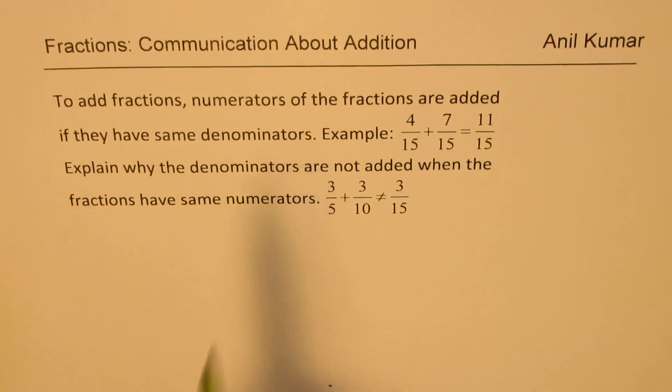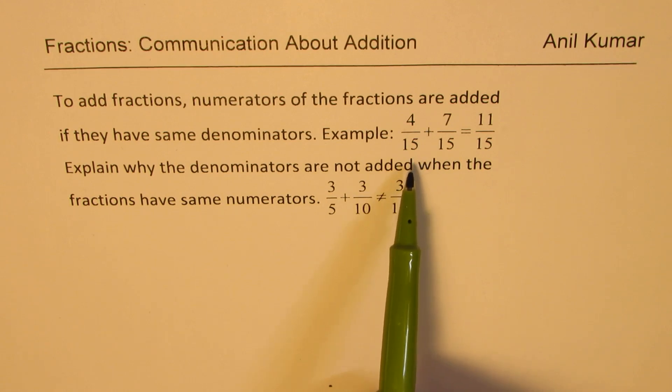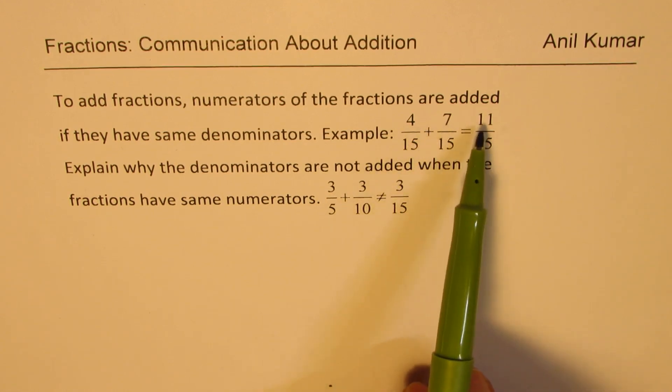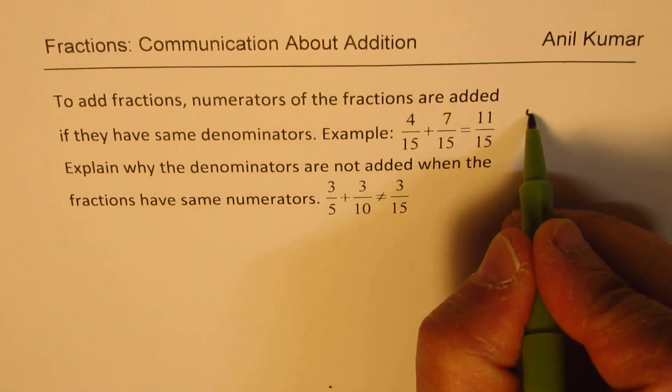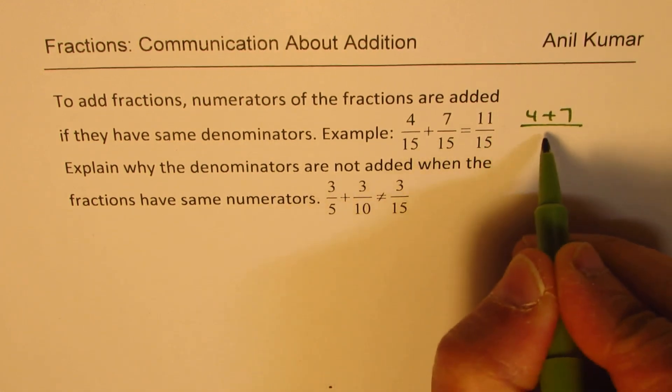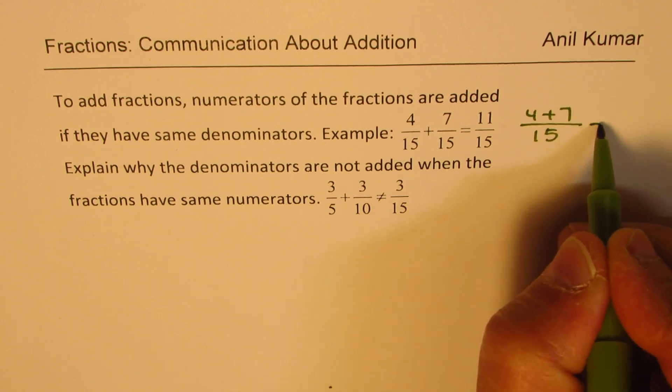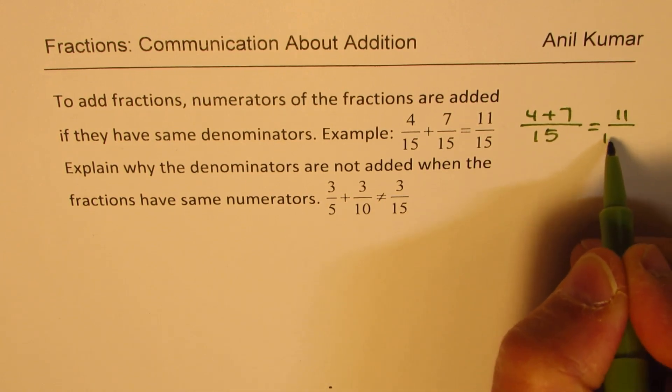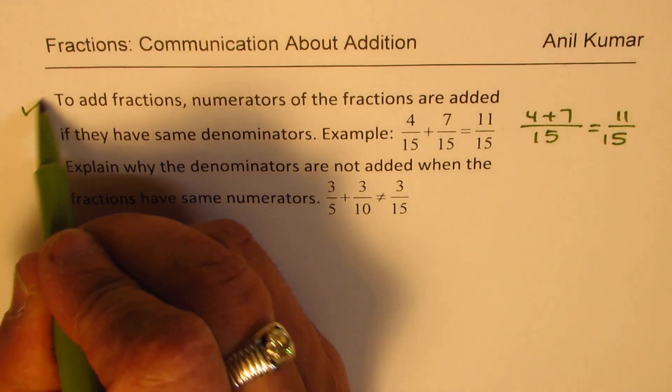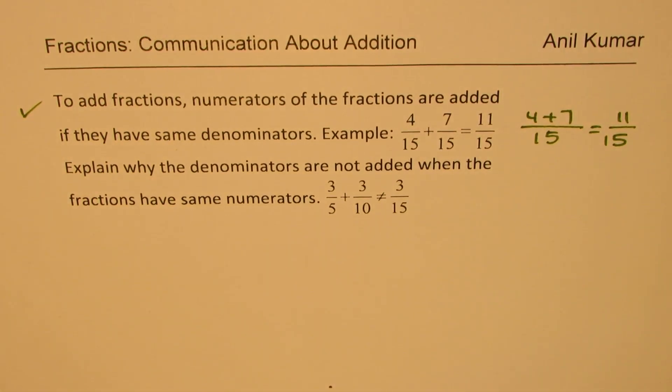For example, 4 over 15 plus 7 over 15. You add 4 and 7, you get 11, right? So what you do is you just add 4 and 7 and the denominator remains as 15, and you get your result as 11 over 15. So that is how we add fractions. We need to have same denominator to add fractions.